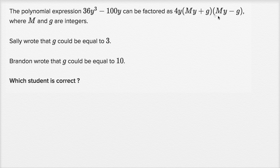When you look at this, it seems really daunting with all these m's and g's here, but we just need to realize that they're factoring out, first they factor out a 4y from the 36y³ - 100y, and it looks like whatever's left is a difference of squares, which they then factor even further. So I encourage you to pause the video and just factor this out as much as you can, first factoring out a 4y, and then we could think about what g is going to be equal to or whether Sally or Brandon is correct.